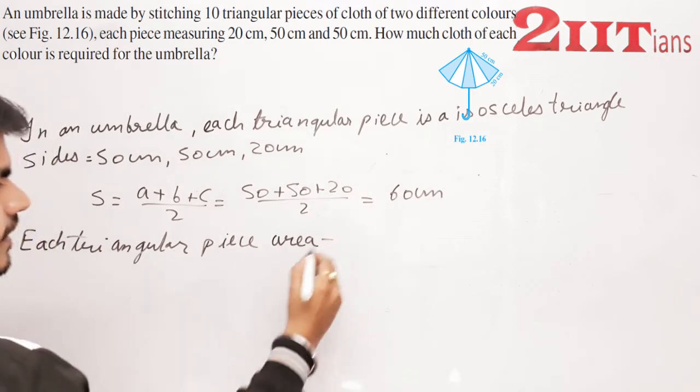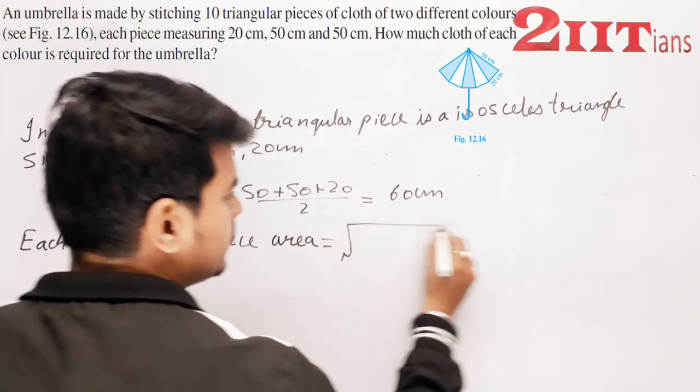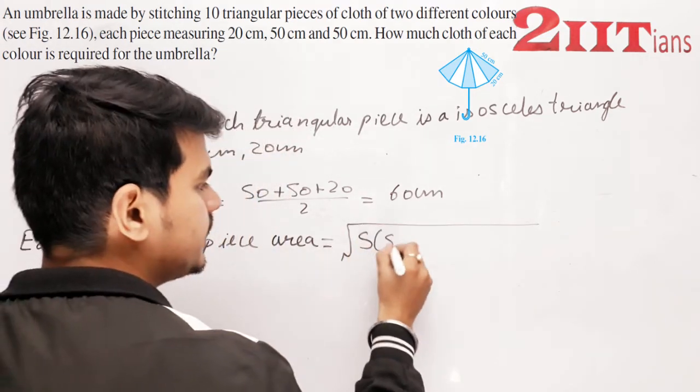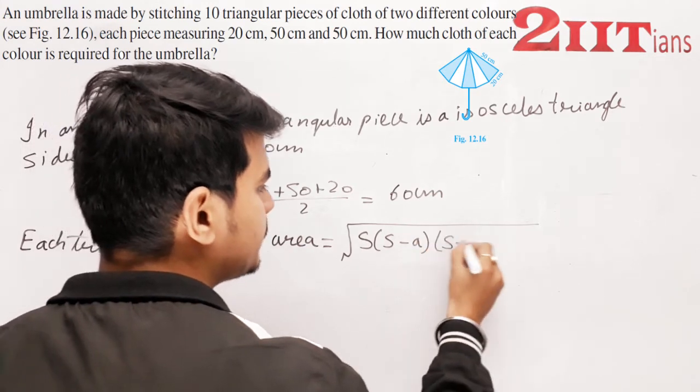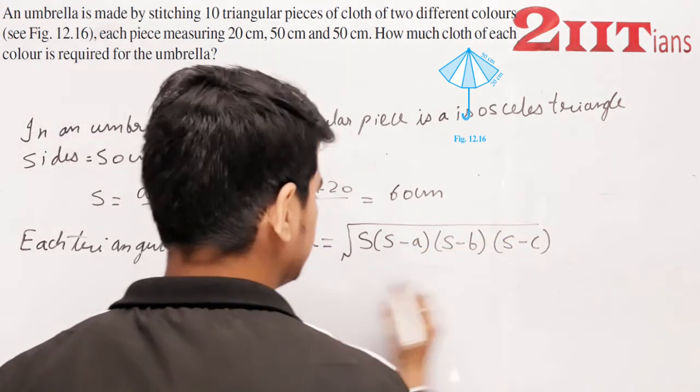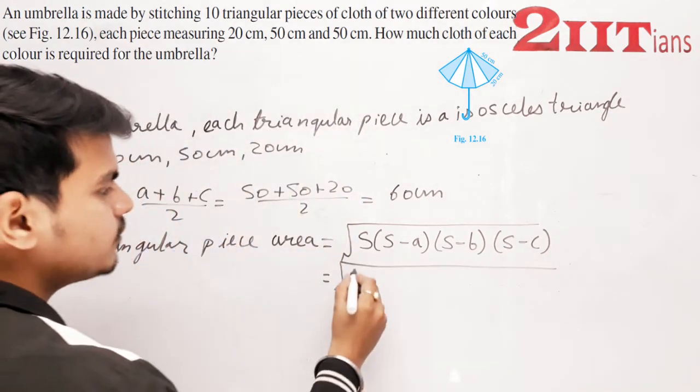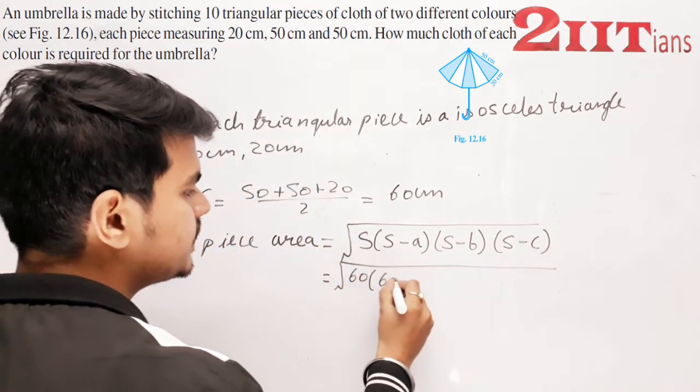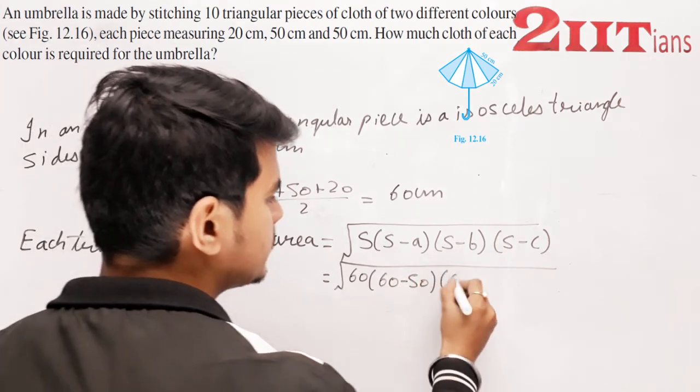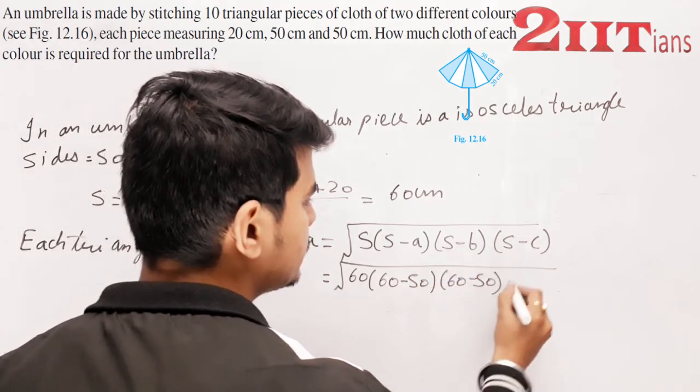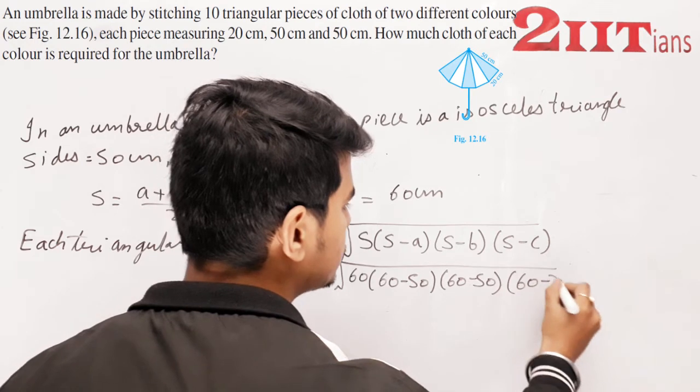Each triangular piece area = √[s(s-a)(s-b)(s-c)] = √[60(60-50)(60-50)(60-20)]